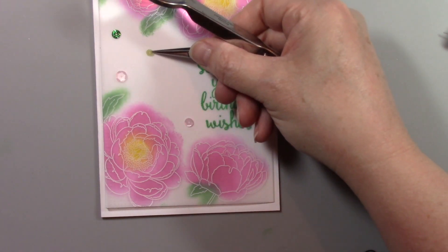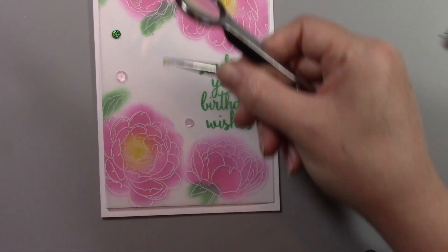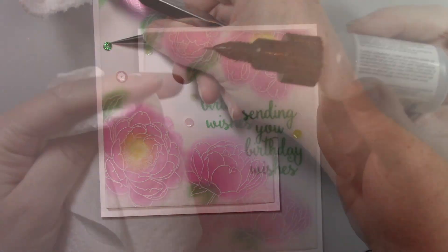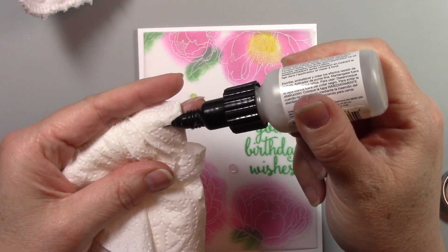Next I'm adding some sequins and again I reach for my On Point glue. I love On Point glue for adhering sequins. I never have them pop off in the mail when I use it.